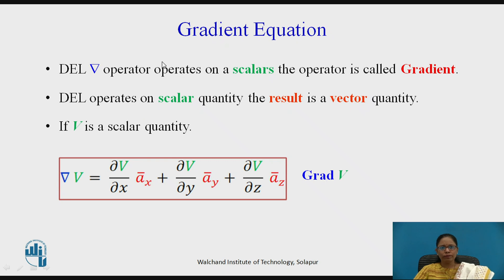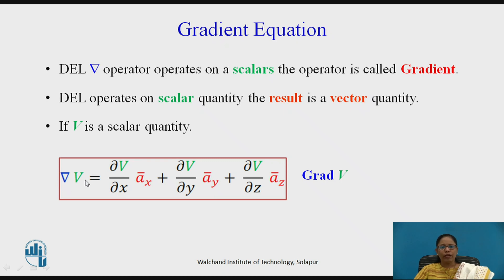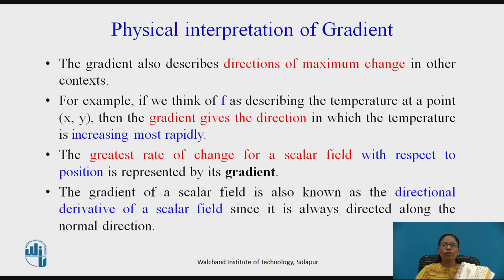First, we will look at gradient. The del operator operates on scalars, and in that case the operation is called gradient. Del operates on a scalar quantity but results in a vector quantity. If V is some scalar quantity, then del V, called grad V, equals (∂V/∂x)âx + (∂V/∂y)ây + (∂V/∂z)âz. This is the equation of gradient of V.